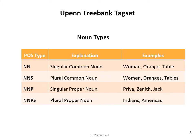Looking at important PTB tags used in NLP — for noun types: NN is singular common noun (e.g., man, orange, table); NNS is plural common noun (e.g., men, oranges, tables); NNP is singular proper noun (e.g., Priya, Zenith, Jack); and NNPS is plural proper noun (e.g., Indians, Americans).